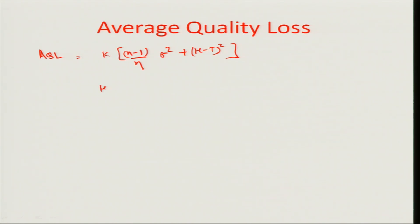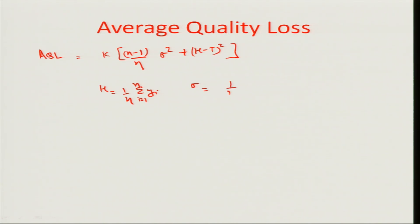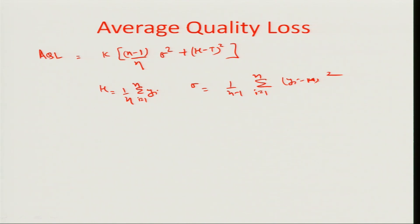We further defined the values of mu and sigma by looking at the average of all the observations y_i, with i varying between 1 and n, and sigma to be 1 by (n minus 1) times the sum of (y_i minus mu) squared. Having said that, what the AQL converts into for different sample sizes n is what we will discuss now.